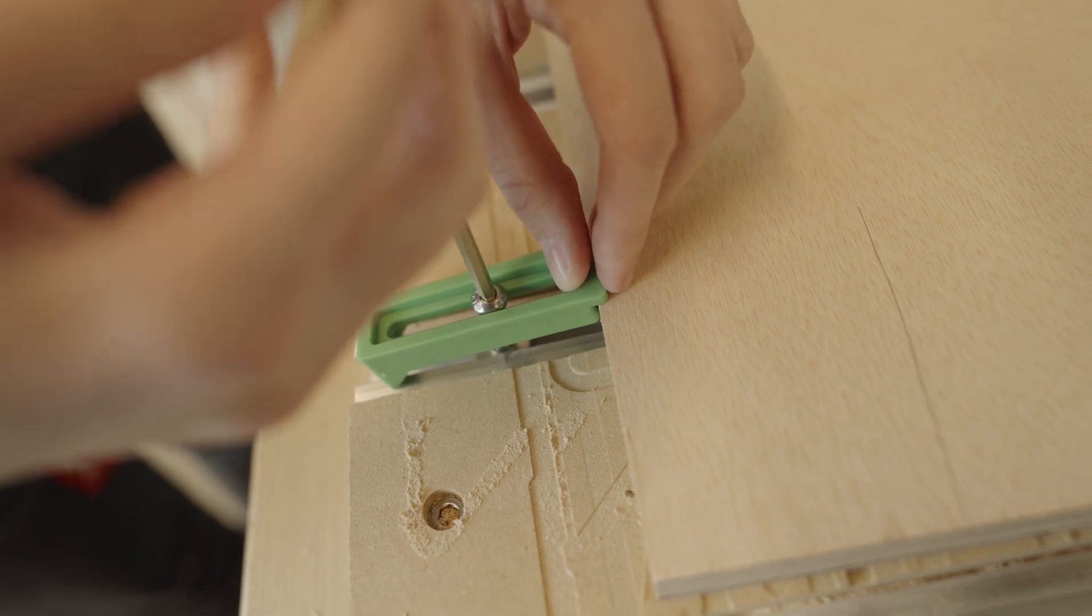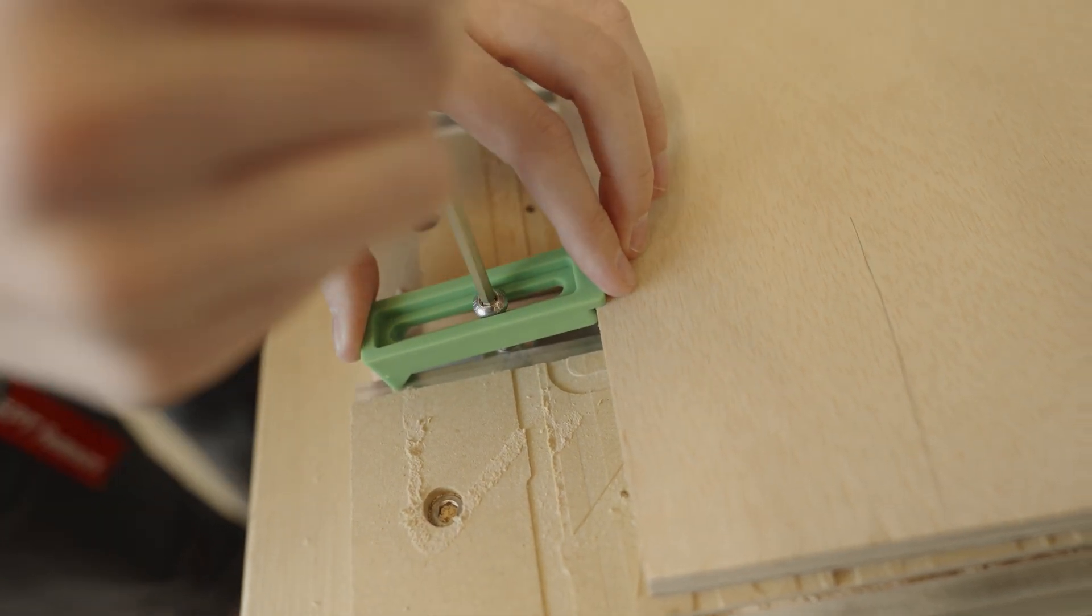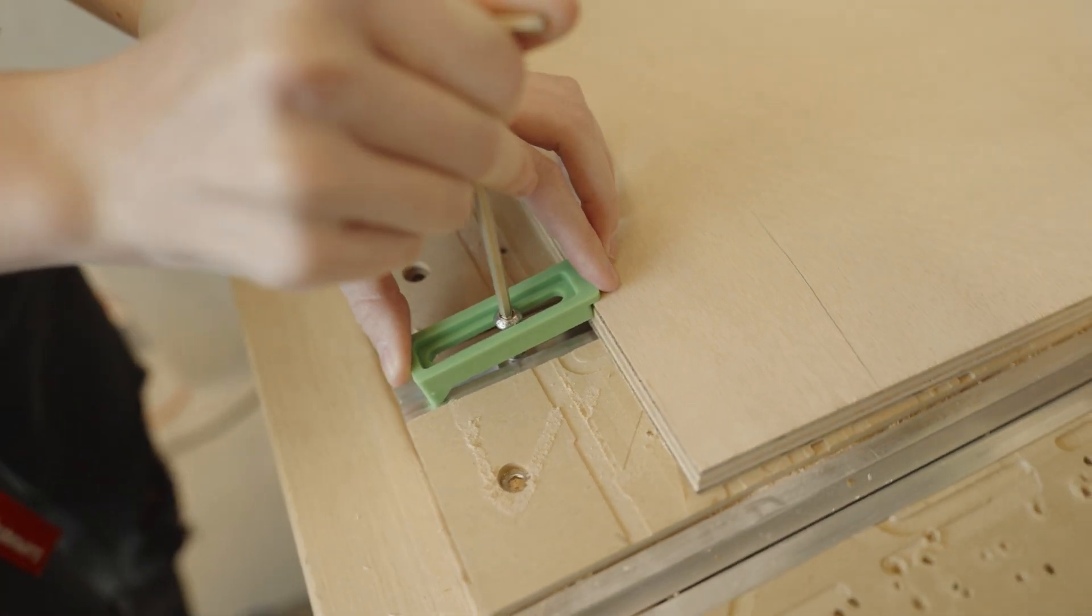Generally speaking, four clamps is the best way to go. Sometimes you can get away with less clamps if your part is smaller or you're using a small tool.